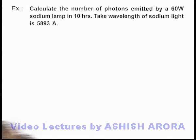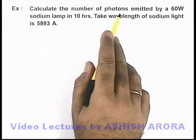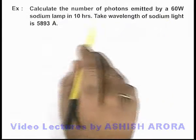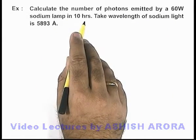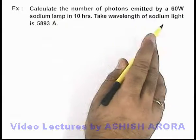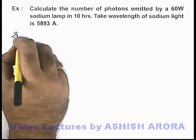In this example, we are required to calculate the number of photons emitted by a 60 watt sodium lamp in 10 hours. We are given that the wavelength of sodium light is 5893 angstrom.